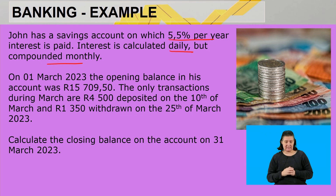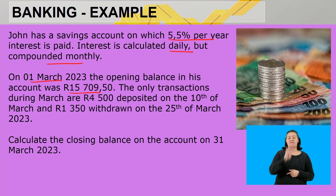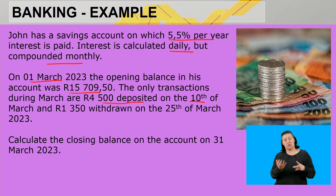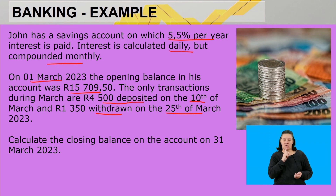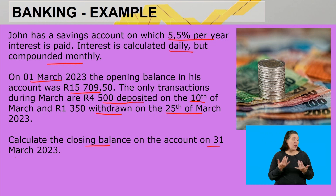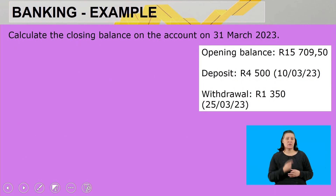That was the opening balance on the 1st of March. The only transactions during March are: four thousand five hundred rand deposited on the 10th of March, and one thousand three hundred and fifty rand withdrawn on the 25th of March. We need to calculate the closing balance on the account on the 31st of March 2023.